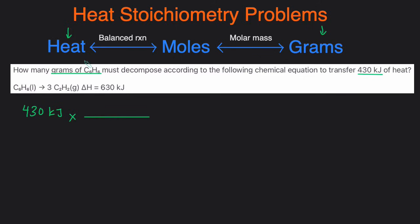The first step is to convert heat to moles. We put kilojoules on the bottom to get rid of it, and moles of C6H6 on the top, because whatever you're trying to go to goes on top and whatever you're trying to get rid of goes on the bottom. Looking at the balanced chemical reaction, there is one C6H6 and 630 kilojoules in the reaction. After the first step, the kilojoules disappear and we're left with moles of C6H6.